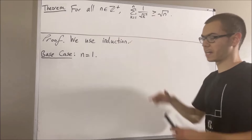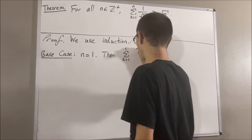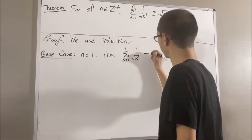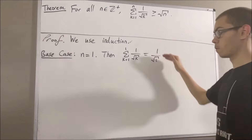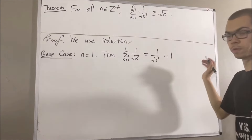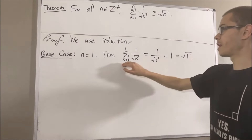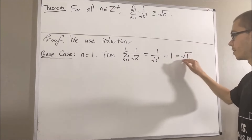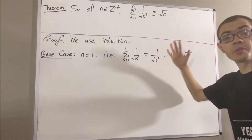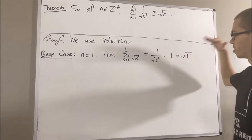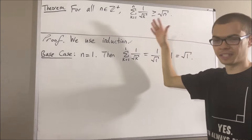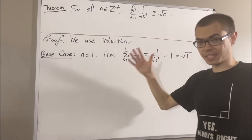Well, let's start by writing the left-hand side. We know that this is just equal to 1 over the square root of 1. And 1 over the square root of 1 is just equal to 1, which is equal to the square root of 1. So we have shown that the left-hand side equals the right-hand side, and therefore the left-hand side is greater than or equal to the right-hand side. So we have shown that this is true in the case where n equals 1. This completes the base case.